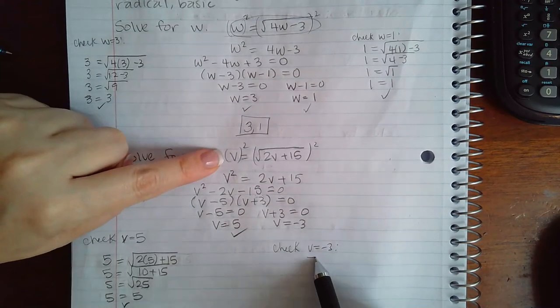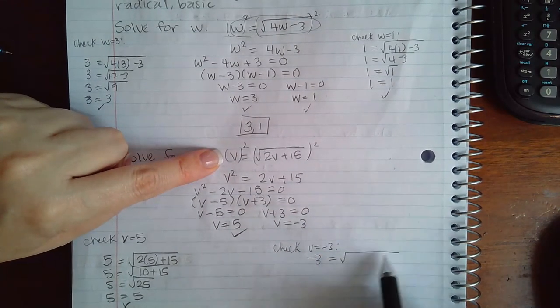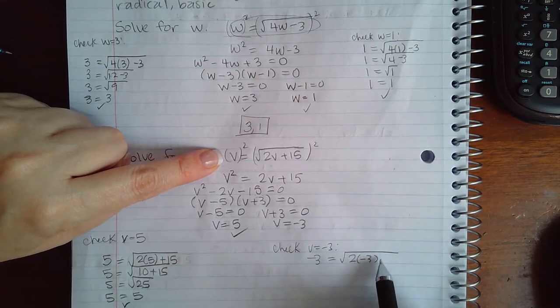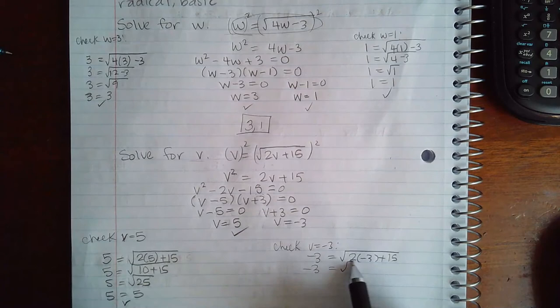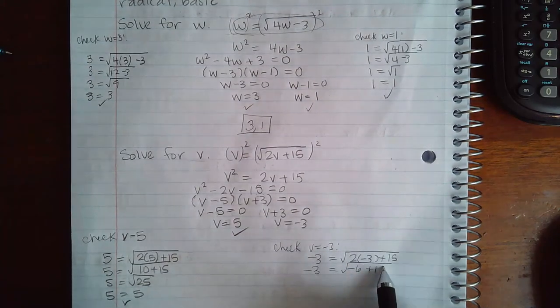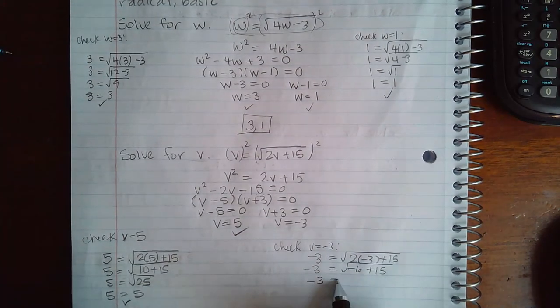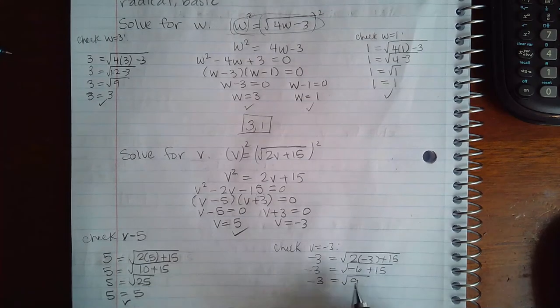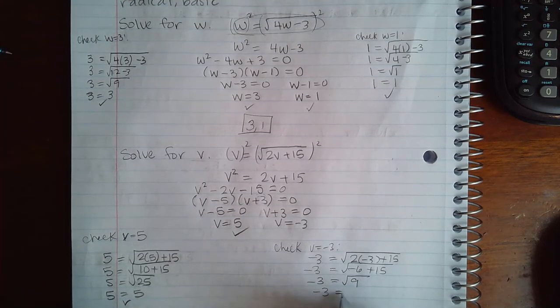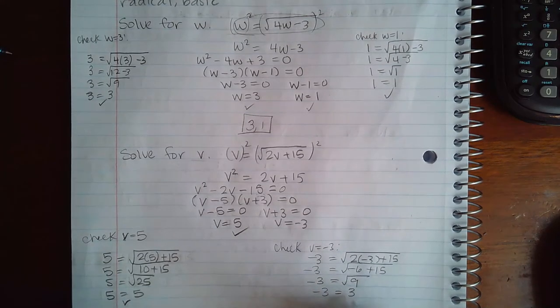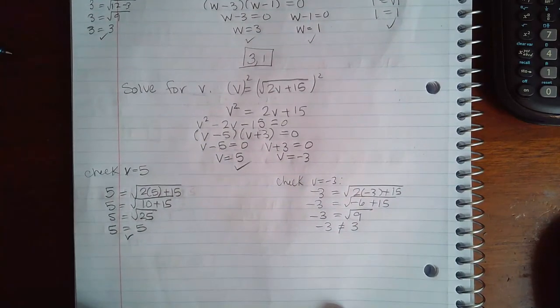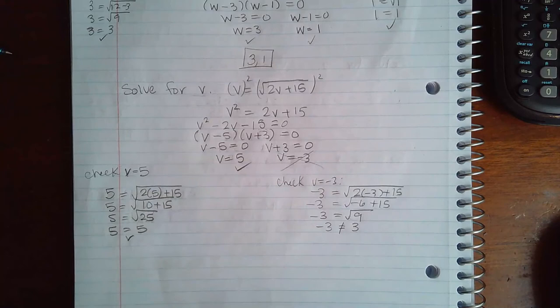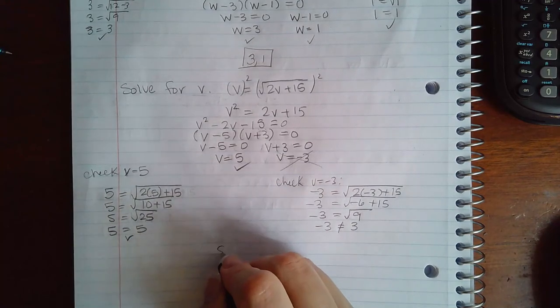Now let's check v equal to negative 3. So into the original, negative 3 equals the square root of 2 times negative 3 plus 15. Negative 3 equals the square root of negative 6 plus 15. Negative 3 equals the square root of 9, and then negative 3 equals, the square root of 9 is just 3. But negative 3 does not equal positive 3. So this solution does not work, which means there's only one answer and that answer is the positive 5.